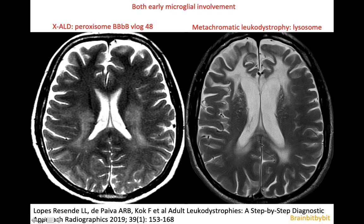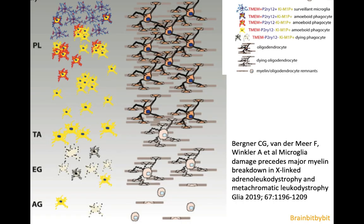If you look at the cellular level in X-linked adrenoleukodystrophy, the peroxisome was involved, which took care of the fatty acid metabolism, whereas in metachromatic leukodystrophy, there's a problem with the lysosome — that's the garbage system of the cell.